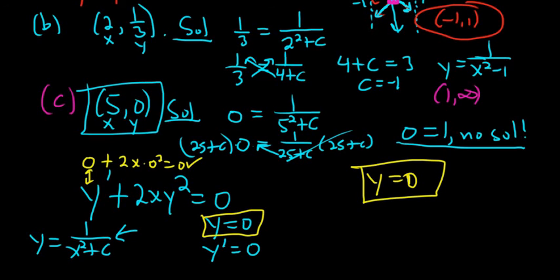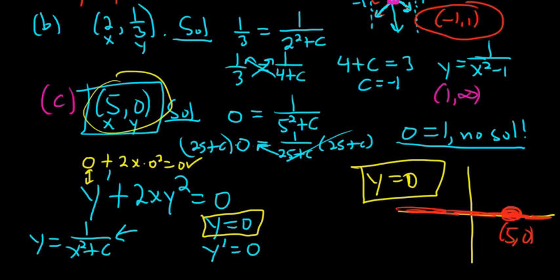And it does indeed pass through 5, 0. Why? Well, if you graph it, y equals 0 is a horizontal line. And there is 5, 0. So it certainly passes through 5, 0. So y equals 0 is a solution to this differential equation and it does pass through 5, 0, so it is the answer to this question. What about the interval of definition? Well, this thing is defined everywhere, so it would just be negative infinity to infinity.